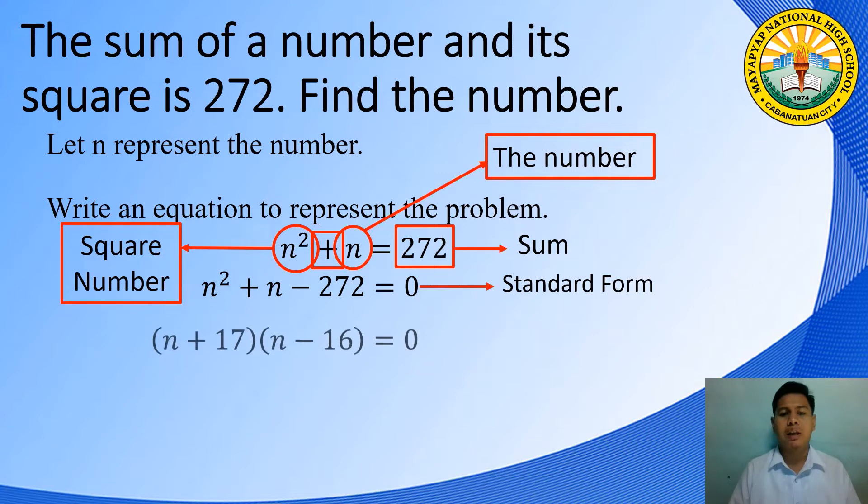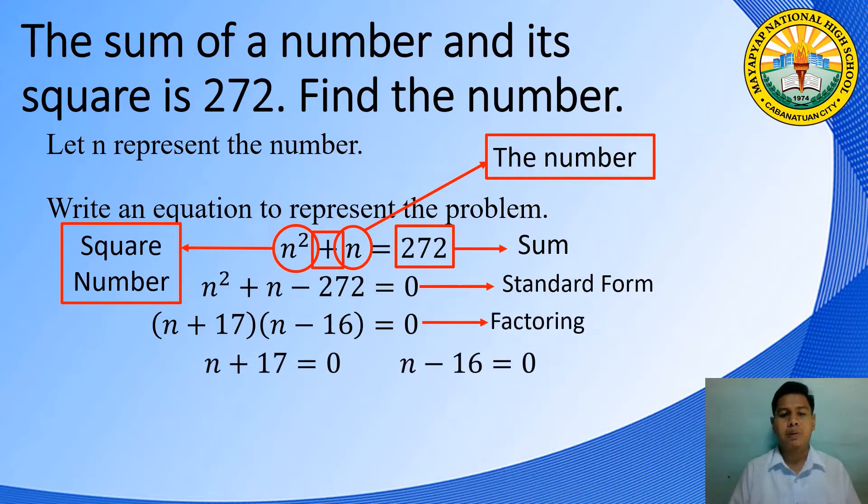Factoring the left side of the equation, we have (n + 17)(n - 16). Apply the zero product property. We must set each factor equal to zero. Solve for the value of n. n is equal to negative 17 and n is equal to 16.